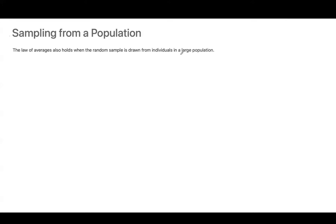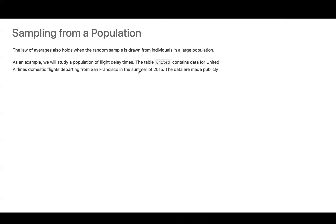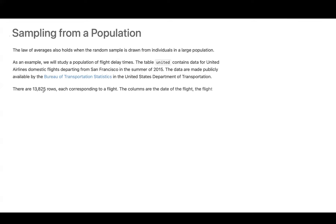The law of averages also holds when a random sample is drawn from individuals in a large population. As an example, we will study a population of flight delay times. The table 'United' contains data from United Airlines domestic flights departing from San Francisco in the summer of 2015. The data are publicly available. There are 13,825 rows, each corresponding to a flight. The columns are the date, flight number, destination airport code, and departure delay time in minutes. Some delay times are negative — those flights left early.